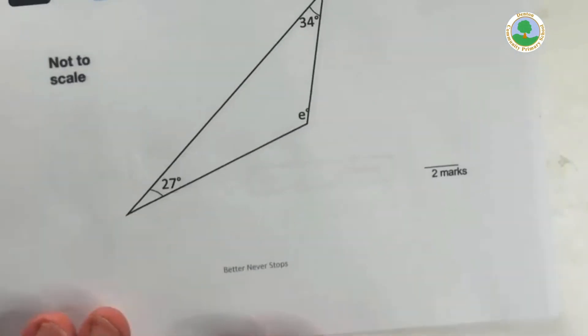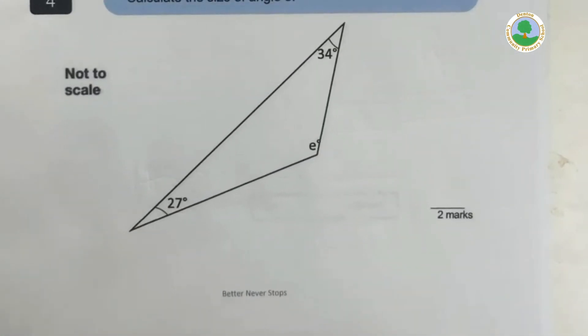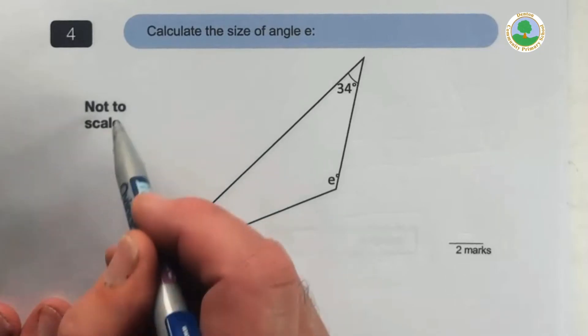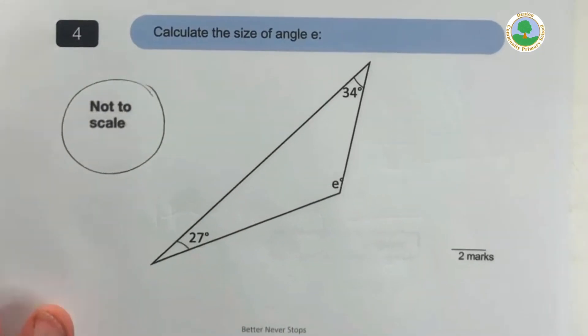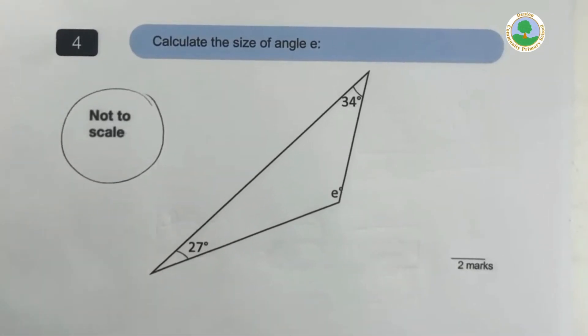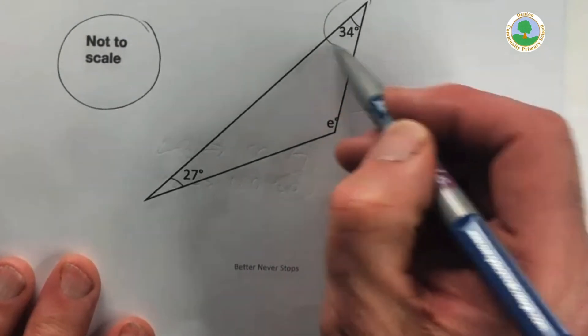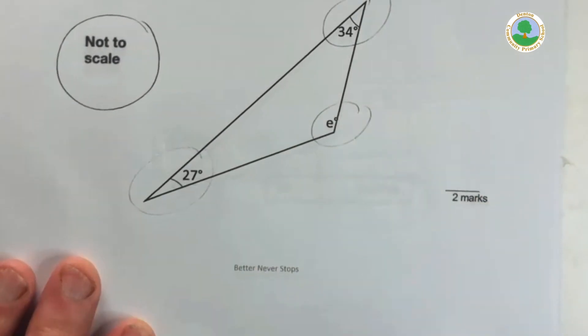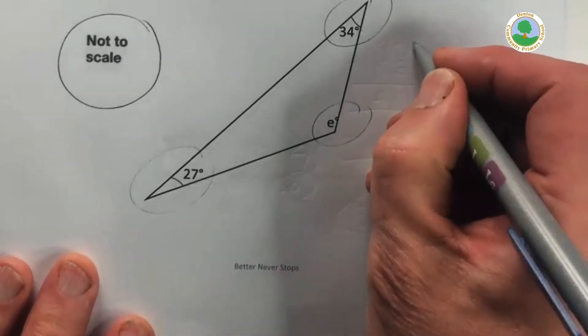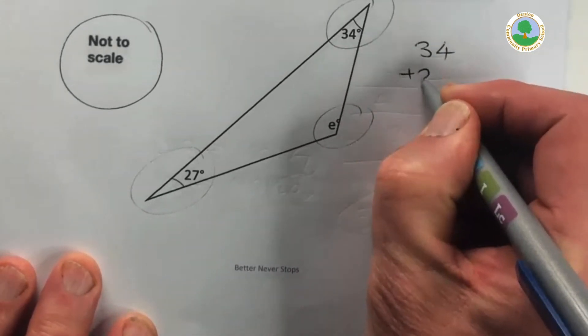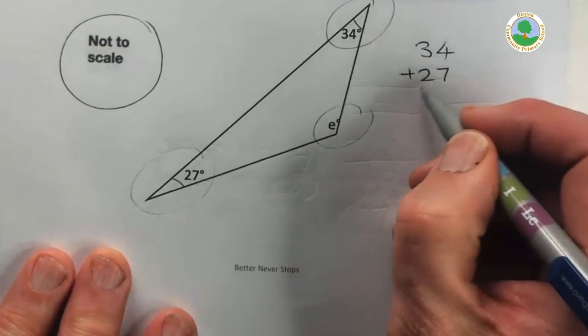Let's have a look at question four then. So calculate the size of angle E. Always, by the way, something I should have said earlier, this means don't get a protractor out or a ruler out. You can't guarantee that they are drawn to scale. In fact, I can guarantee they're not, because I made these. So there we go. And it's a simple enough thing. We've got a triangle. We know these make 180.